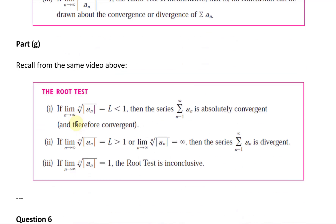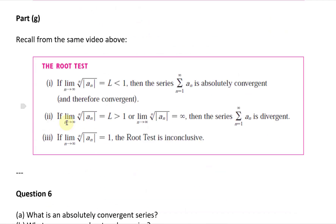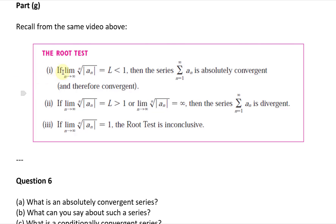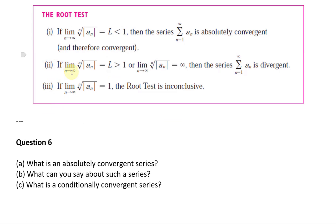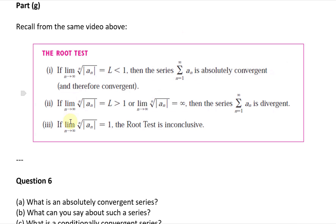Part G is the root test. If the limit as n approaches infinity of the nth root of |a_n| equals L and L is less than 1, then the series summation from n equals 1 to infinity of a_n is absolutely convergent and therefore convergent. If L is greater than 1 or the limit equals infinity, the series is divergent. If L equals 1, the root test is inconclusive, similar to the ratio test.